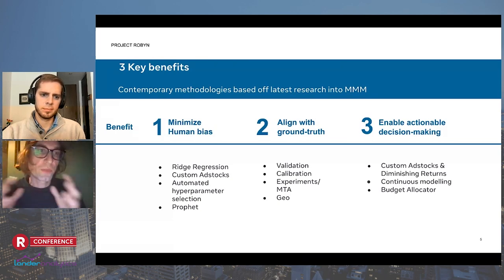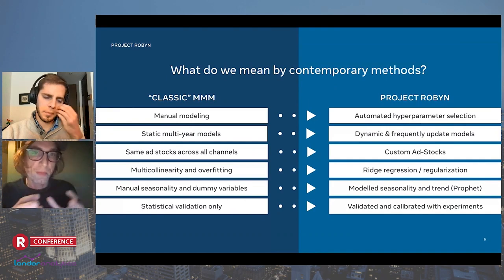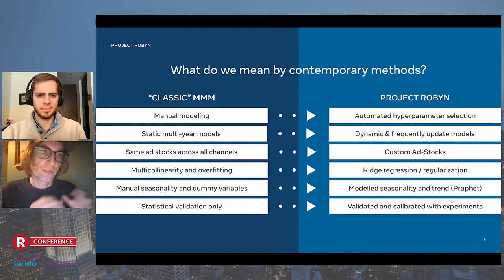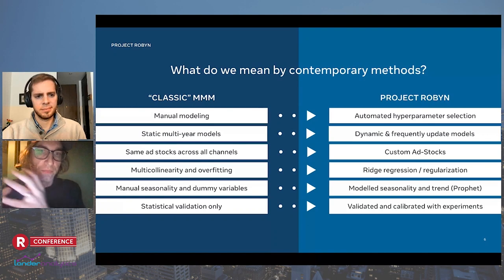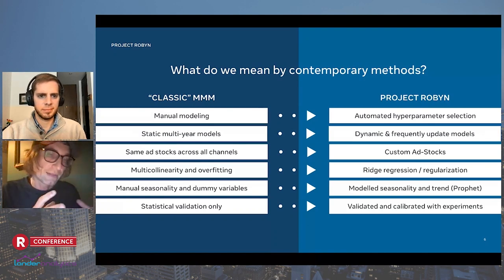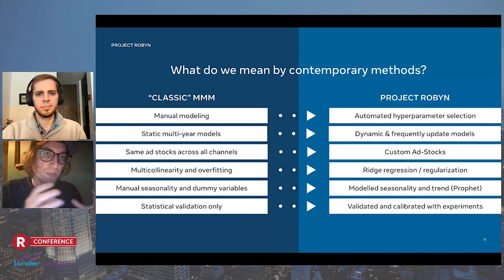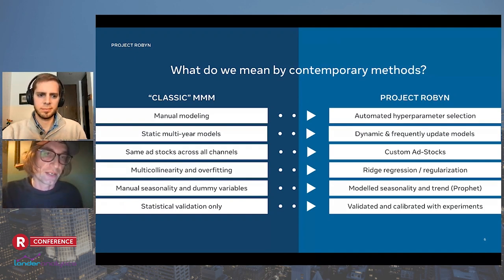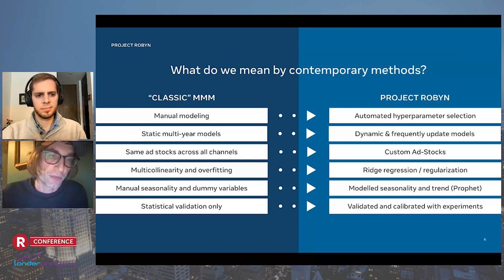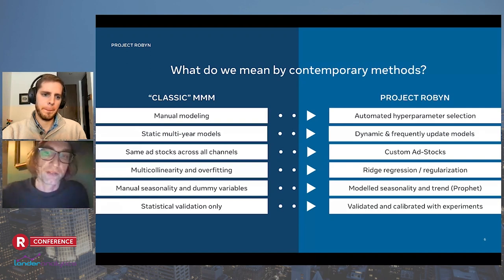We've moved from the classic MMM to what is currently in Project Robin. Instead of manual modeling, we're looking at hyperparameter selection. Instead of static models, can this be more frequent and more dynamic? And how do we deal with things like manual seasonality or having only statistical validation? In a nutshell, that is what we have, and now I'll hand over to Bernardo to take you through the details and the flow behind Robin and how the modules look in R.